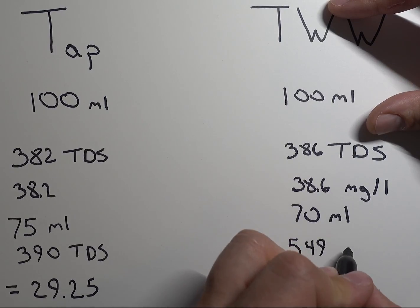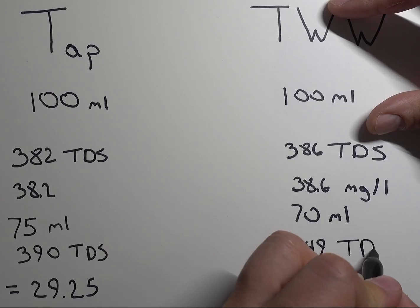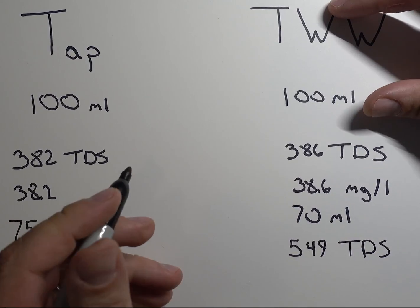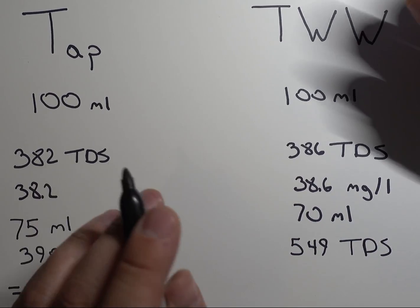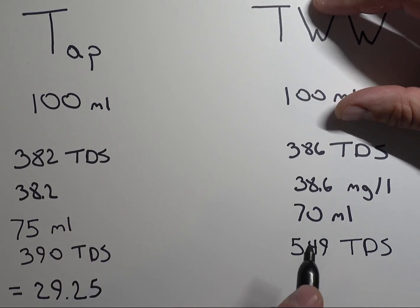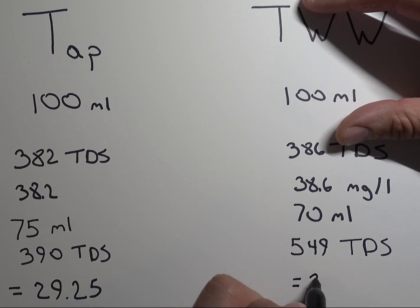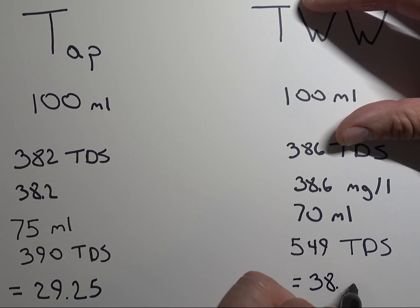Now, the equipment that I was using today isn't ISO 9000. It's not incredibly accurate for an actual scientific study. But for a quick little understanding, these work out well. So with the end of 549 TDS at 70 milliliters, that ends up equaling 38.43.